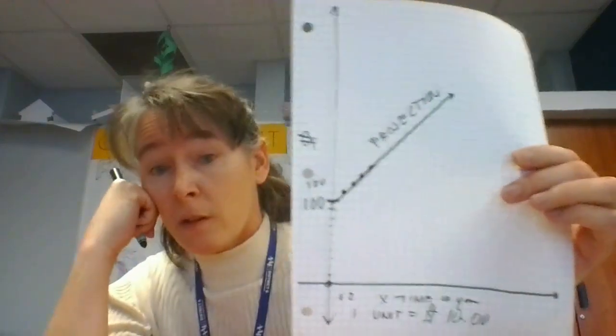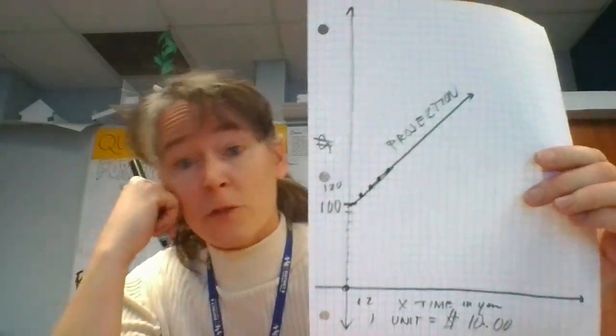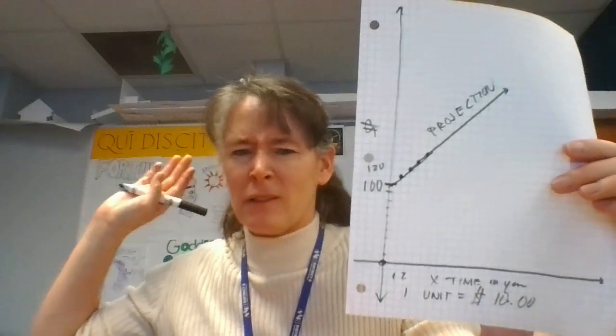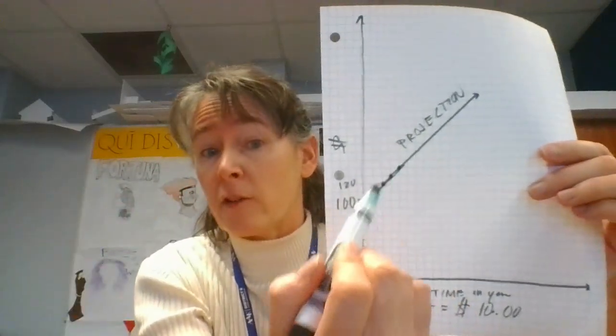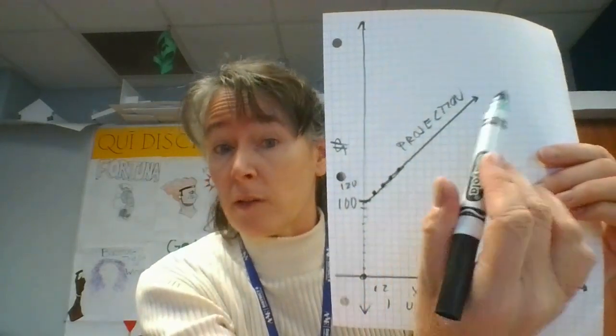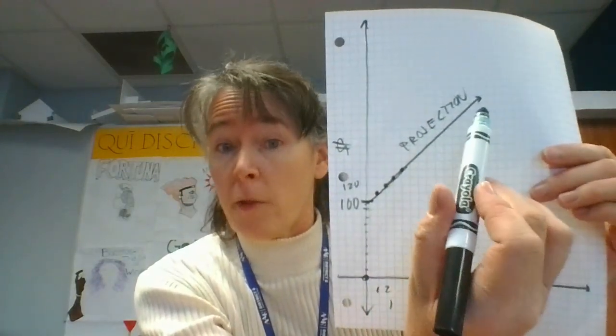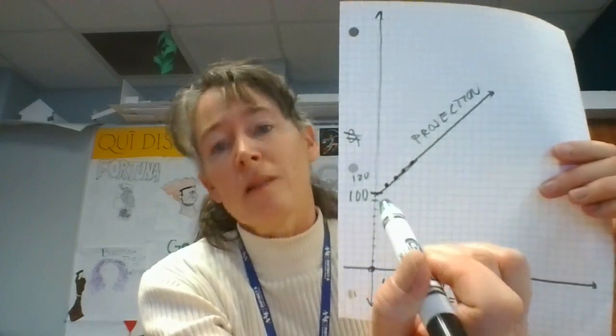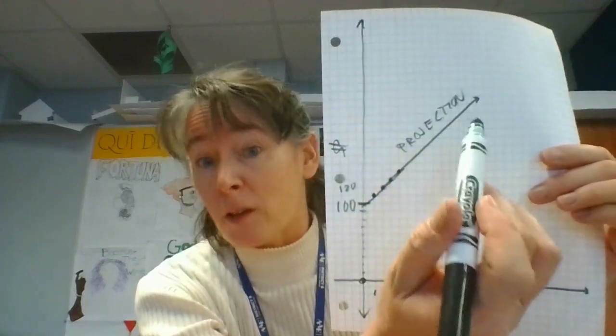If you want to project — let's say you're thinking, what if I open this savings account and keep it for ten years? — that is called a projection. We send the line further along past the data we have, into the future. It's called a projection, which in Latin literally means something like 'throwing forward.' We only have actual data for five years, but we can project that if you keep that savings account for more time, your total money is going to go up. It's a linear function because it makes a straight line.